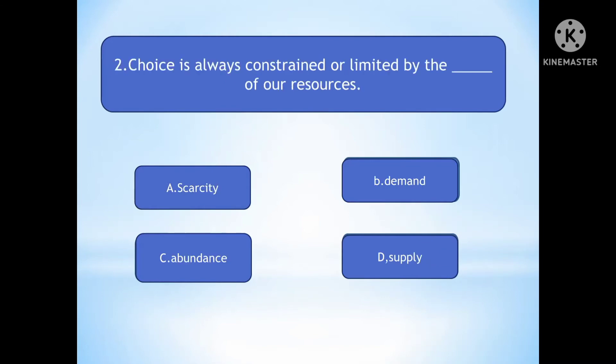Question number two: Choice is always constrained or limited by the dash of our resources — our freedom of choice is limited. Option A is Scarcity. Option B is Demand. Option C is Abundance. Option D is Supply. Our choice is limited by the scarcity of resources, because human wants are unlimited and resources are scarce.